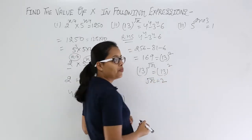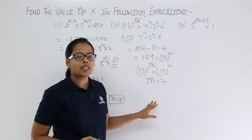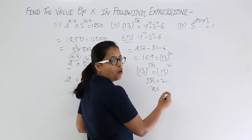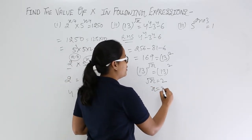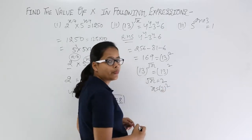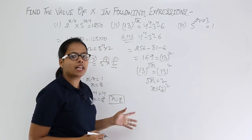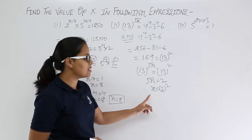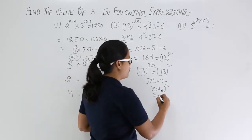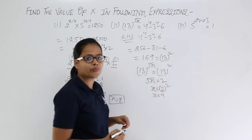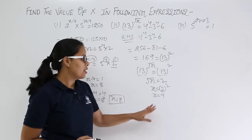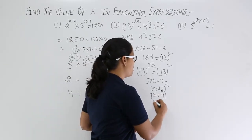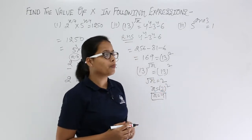This is 13 raised to power √x and the right hand side is 13 raised to power 2. Comparing the two exponents: √x = 2. Taking the square on both sides gives x = 2² = 4. When you square a square root, you get x directly. So the value of x is 4.